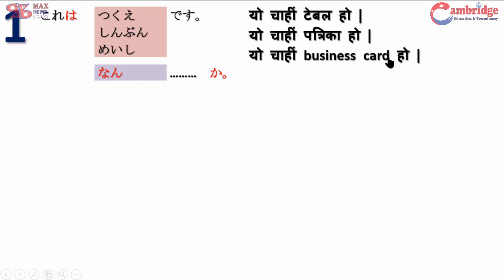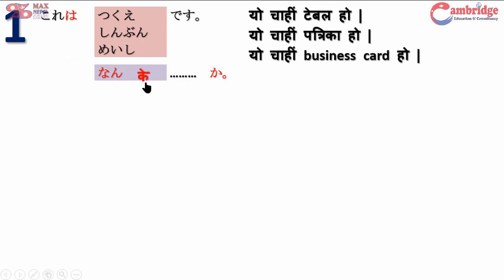'Desu' is the polite copula; also note 'dewa arimasen' for the negative. 'Kore wa nan desu ka' — here 'nan' means 'what,' so the sentence means 'what is this?' For example, 'kore wa nan desu ka' asking about any object around you.